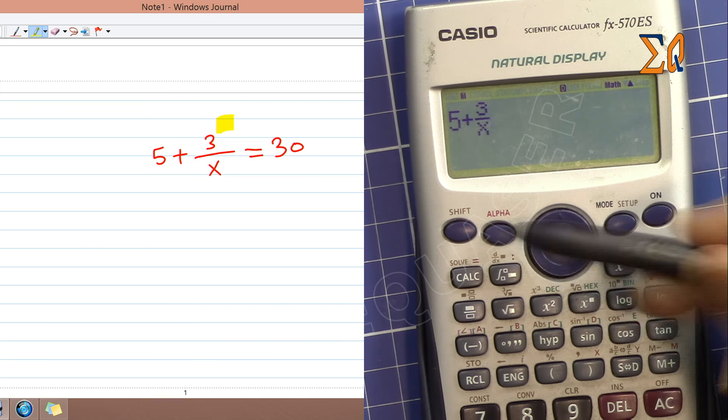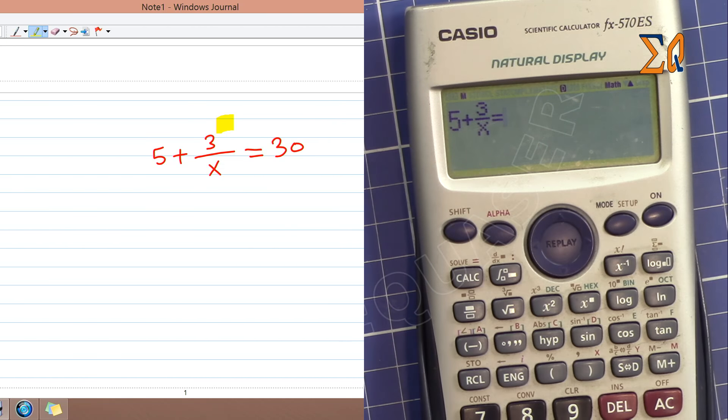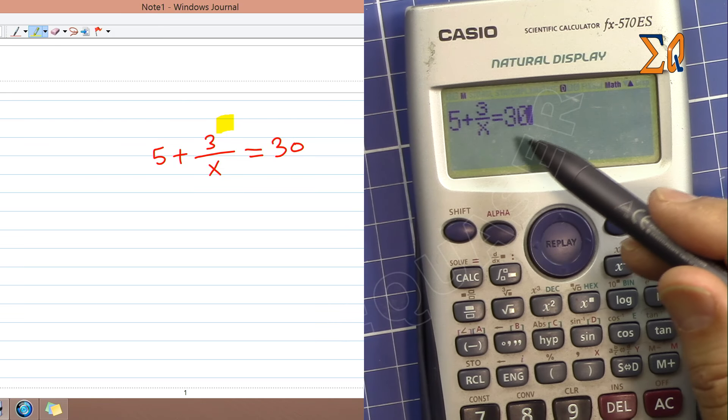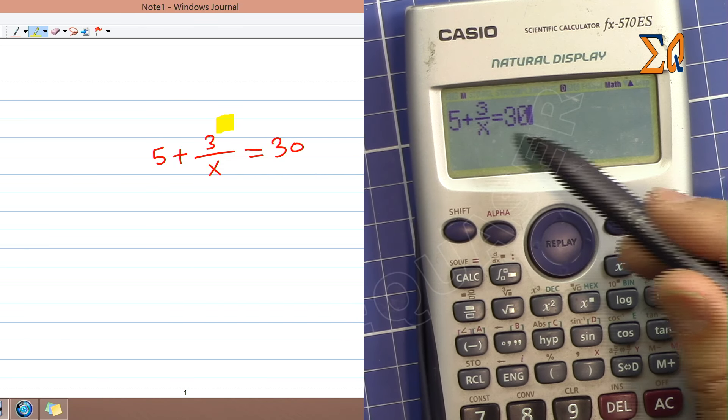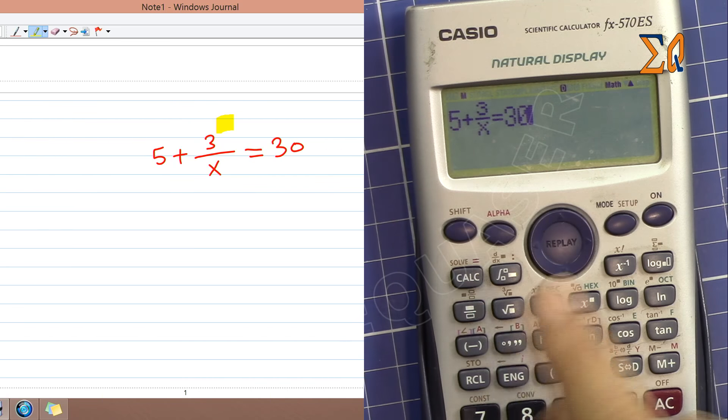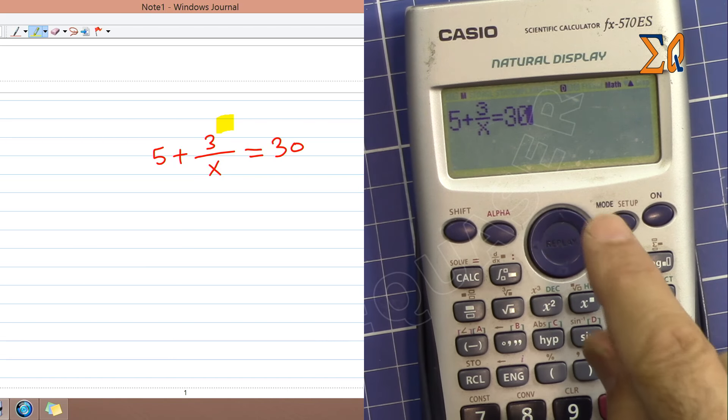And then here we have equal sign - alpha equal - and then 30. Now the equation is entered as it is. You can also enter very complex equations, but not all equations are solvable, so make sure that you understand it.